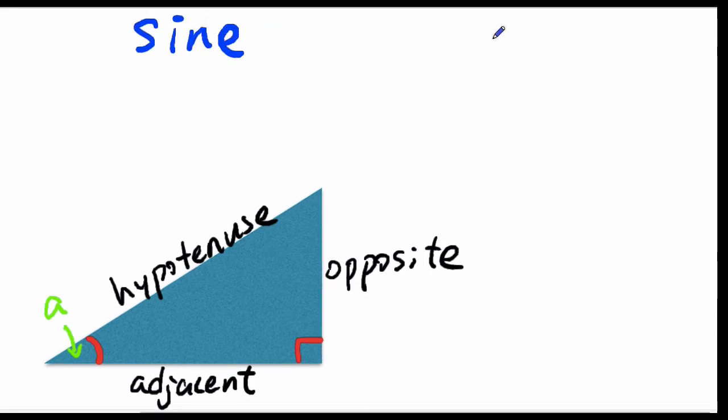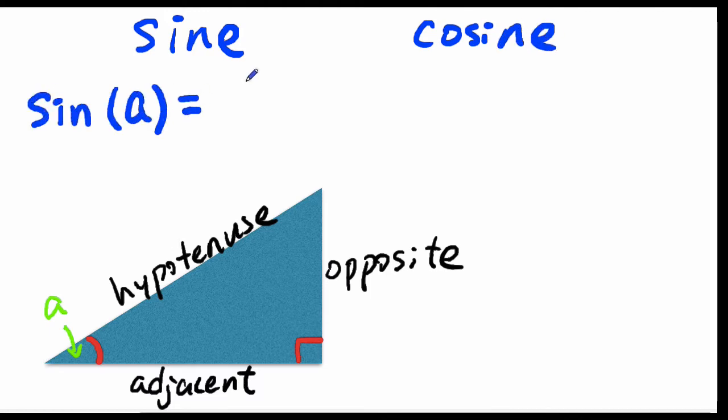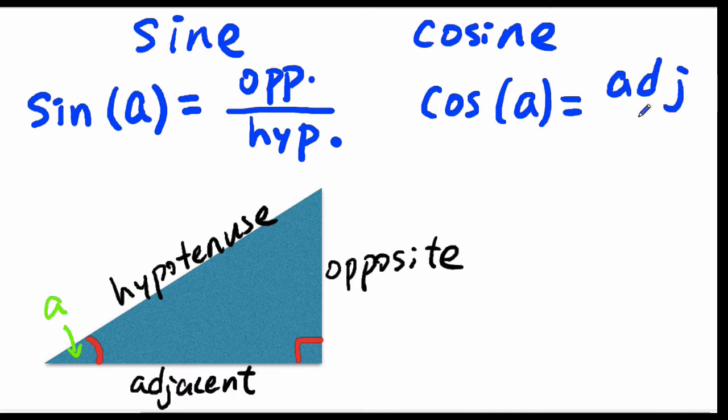Now mathematicians ended up using several functions to relate the angle to the side ratios. Sine of an angle is defined to be the opposite side divided by the hypotenuse, and the cosine of an angle is the adjacent side divided by the hypotenuse.